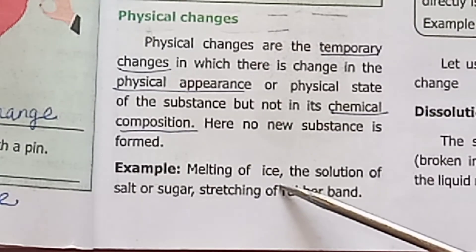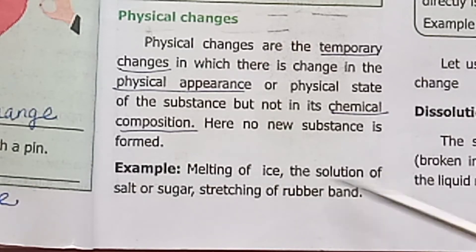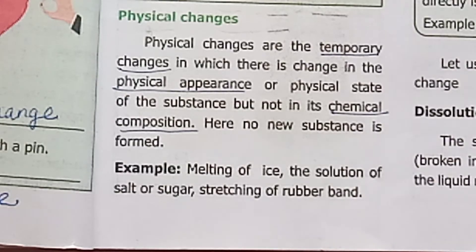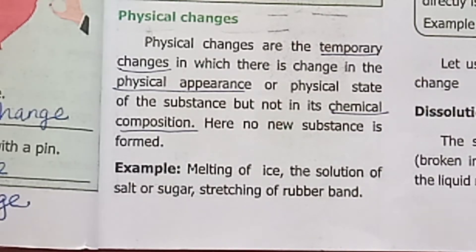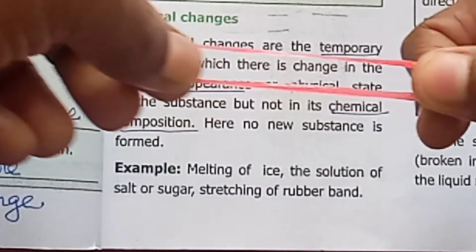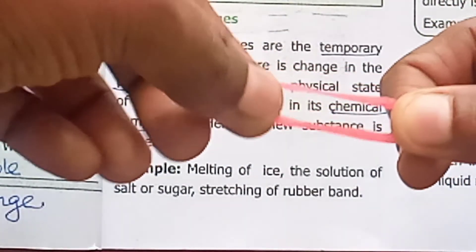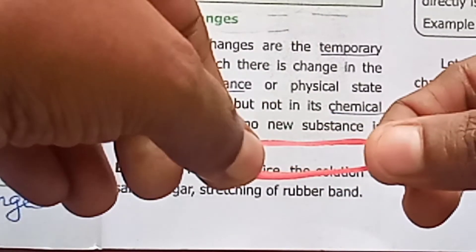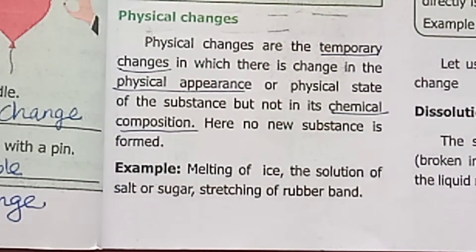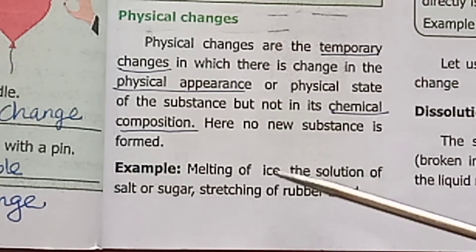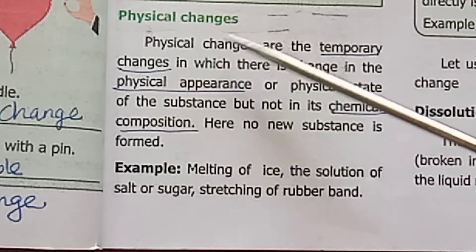This is a physical change. For example, melting of ice, dissolving salt and sugar, and stretching of a rubber band are physical changes. When we stretch a rubber band, only the size changes. When ice melts, it changes to liquid — that is a physical change. Examples for physical change involve only a change in size, shape, or state.